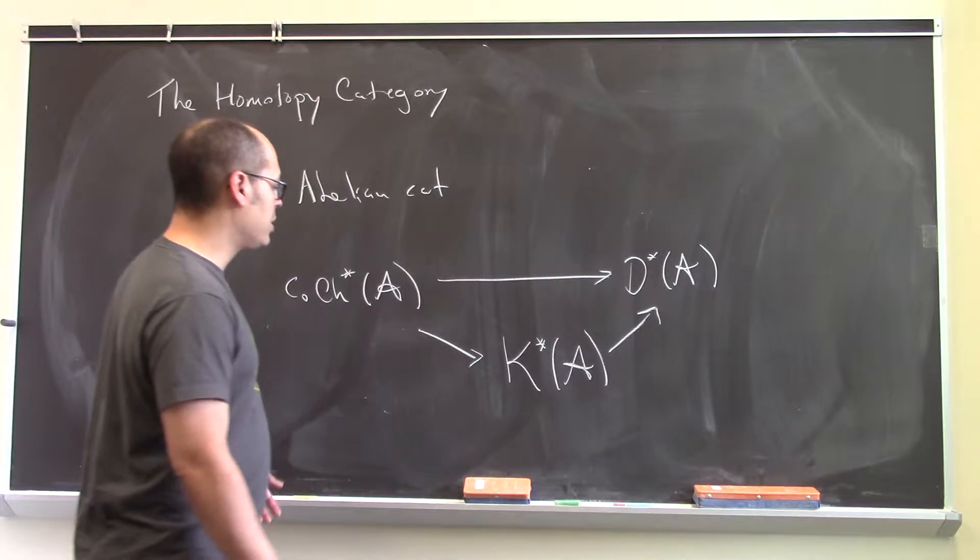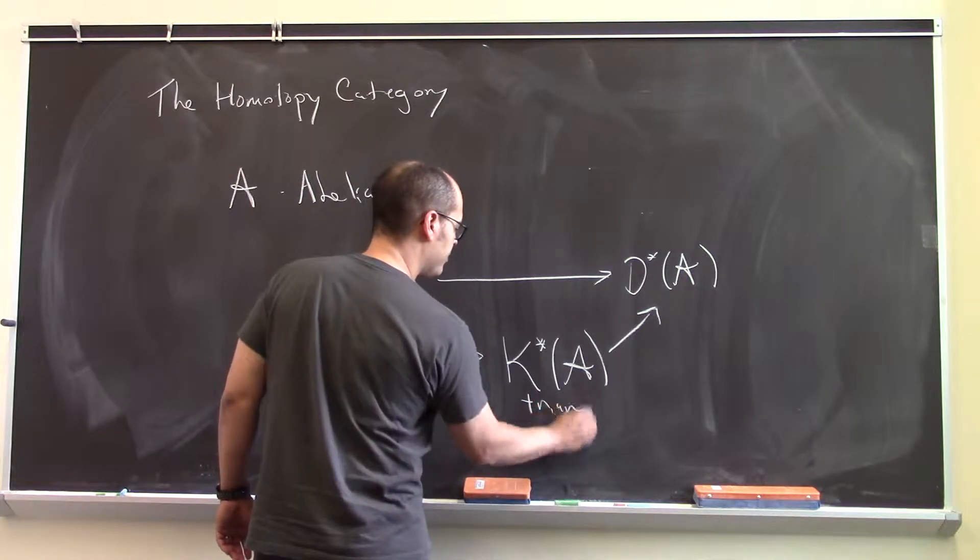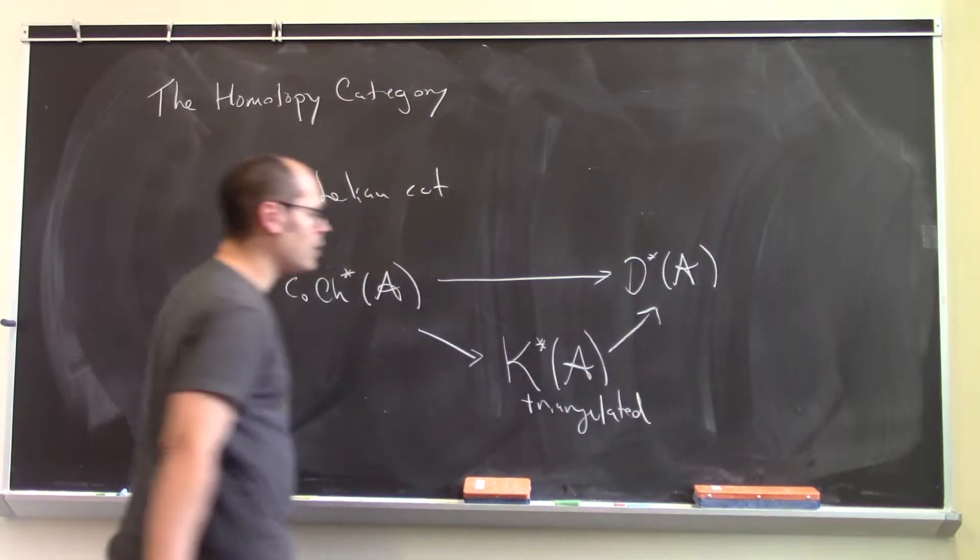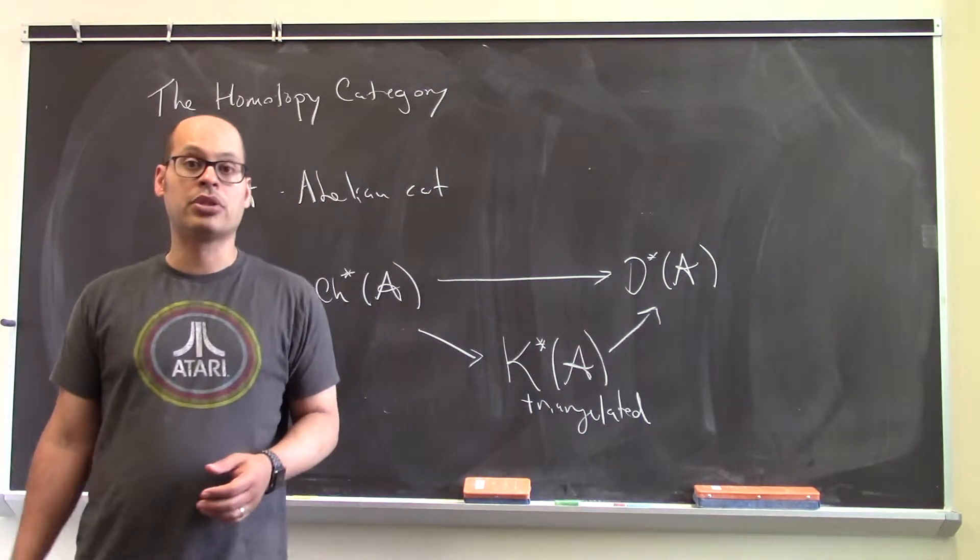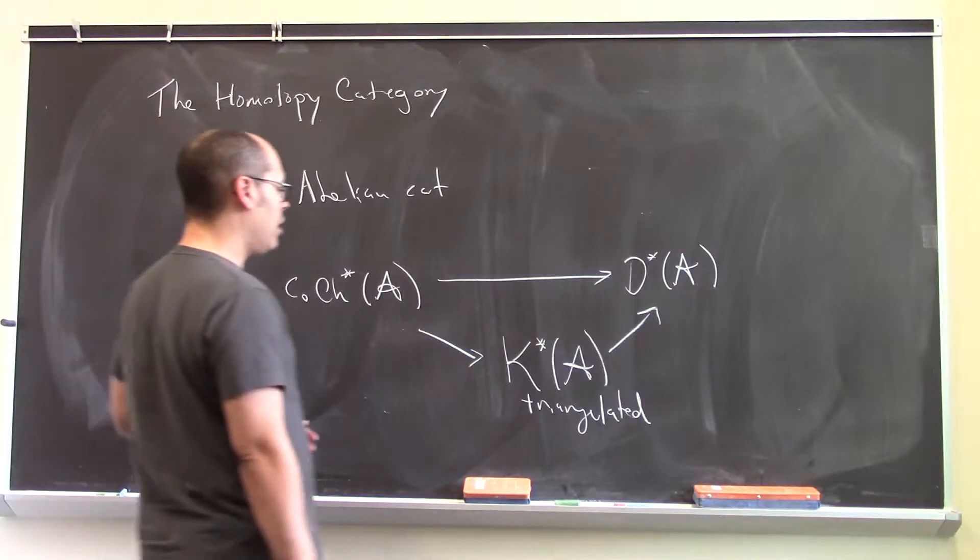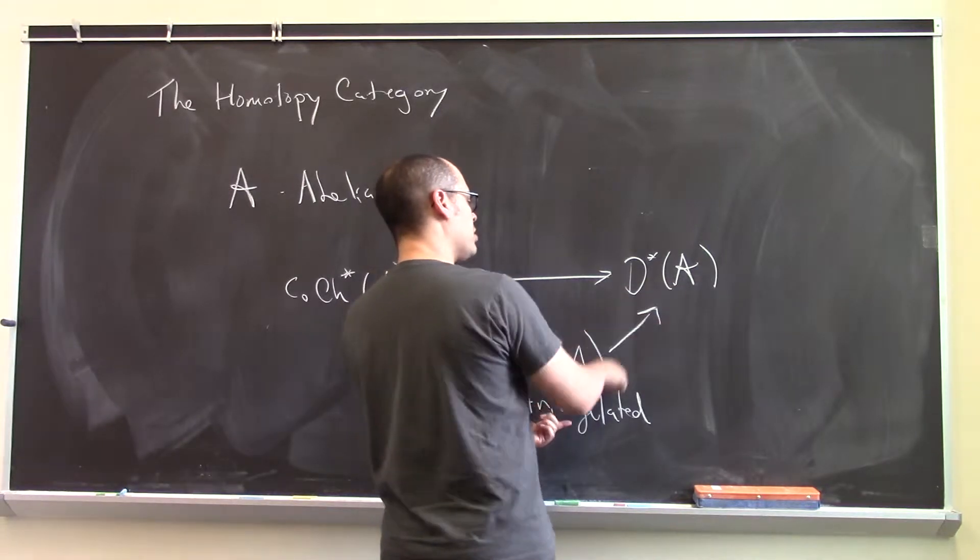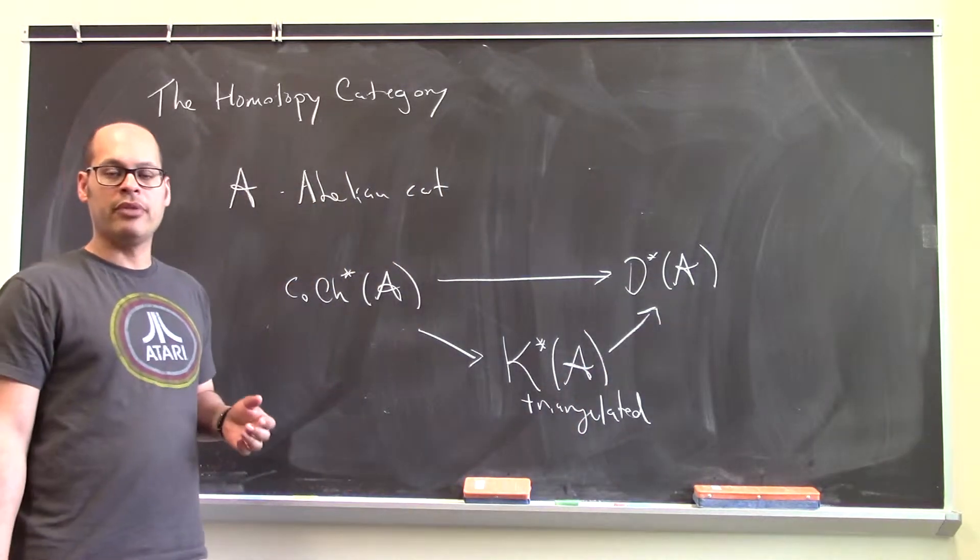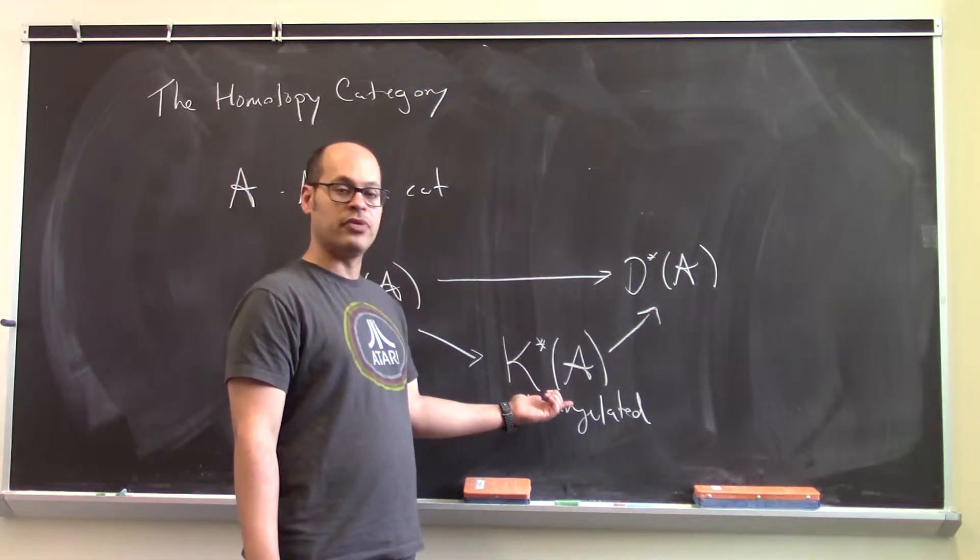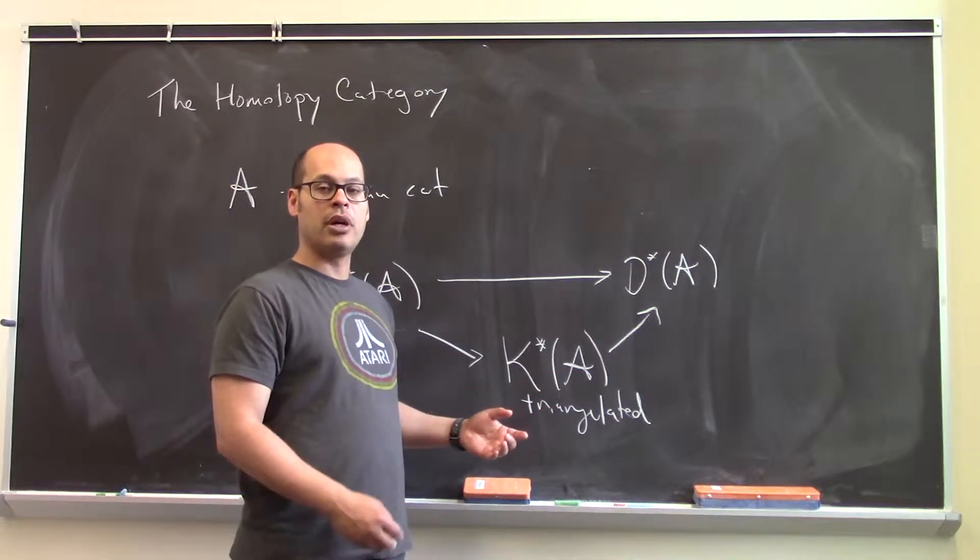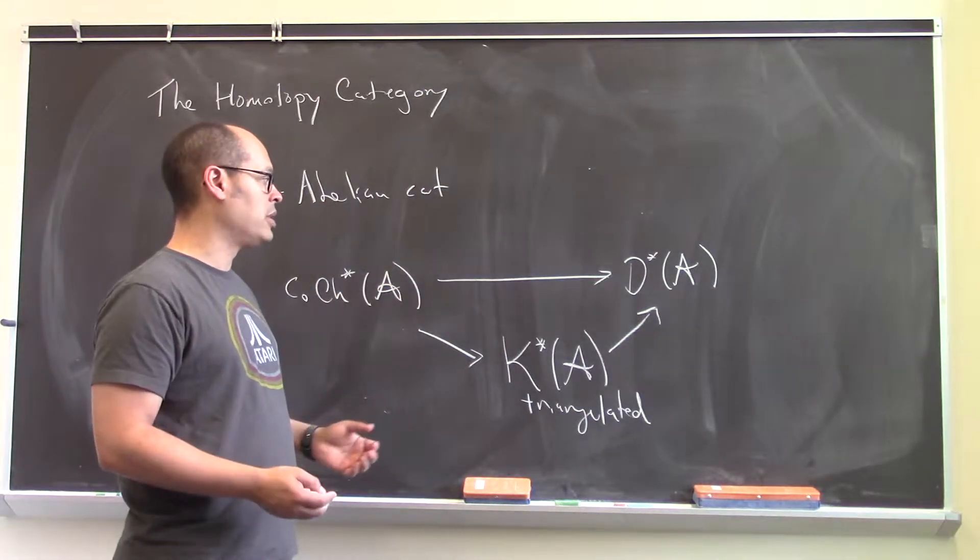For example, this is not only an additive, but in fact a triangulated category already. And so, passing from here to there is just going from one triangulated category to another. Moreover, while this is still a process of localization, it's a much more well-behaved localization process. It turns out that the quasi-isomorphisms viewed as morphisms in here form what's called a localizing set of morphisms. And so, this localization is much more easily described.